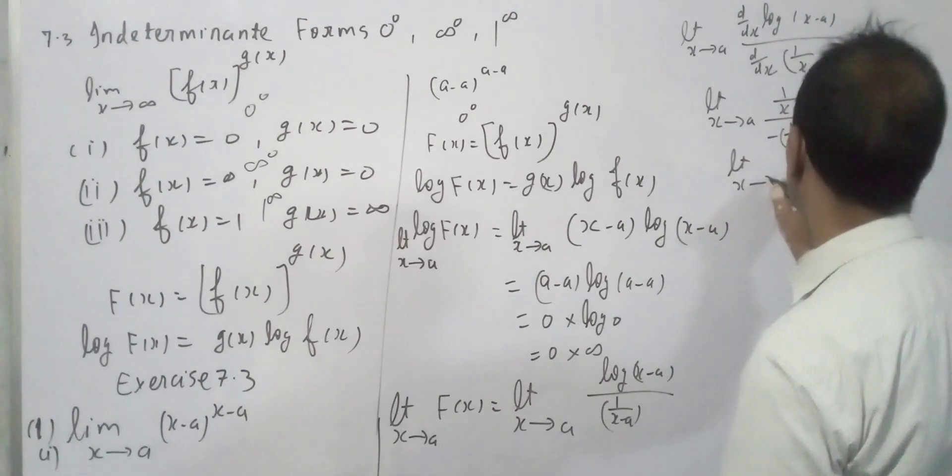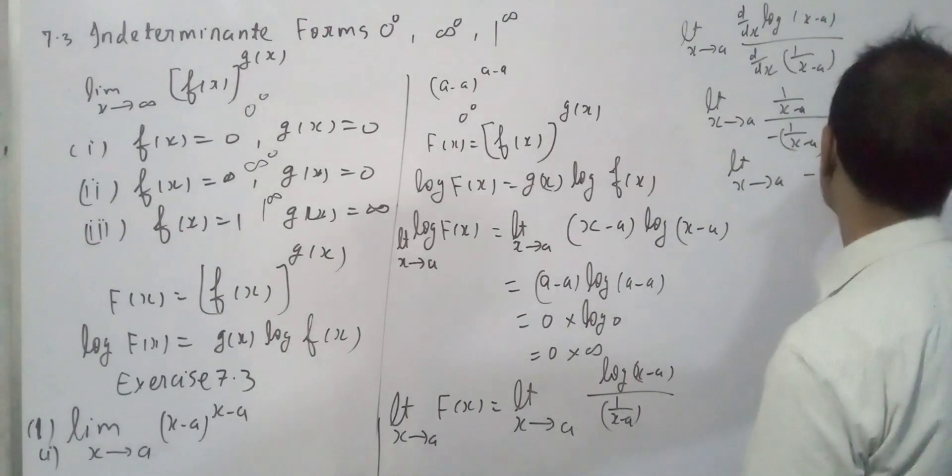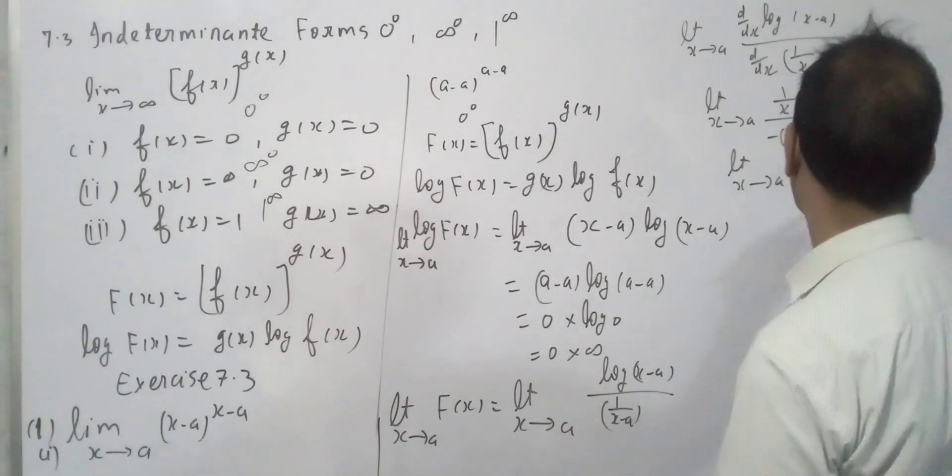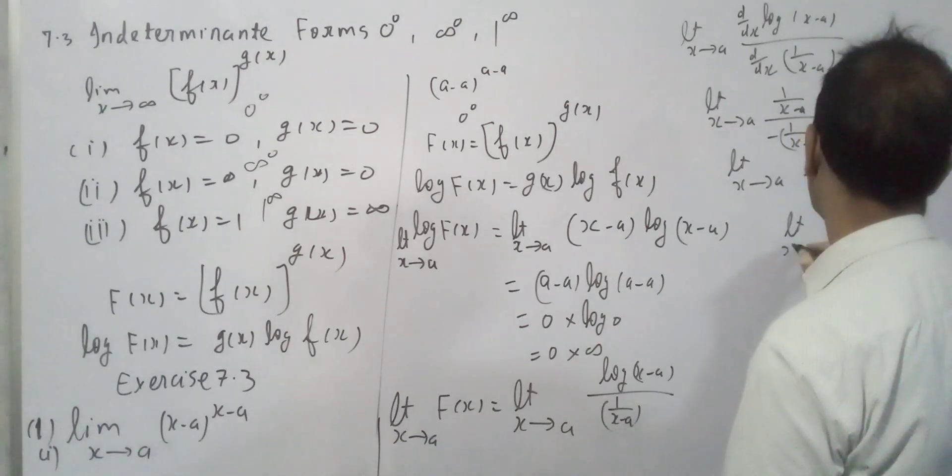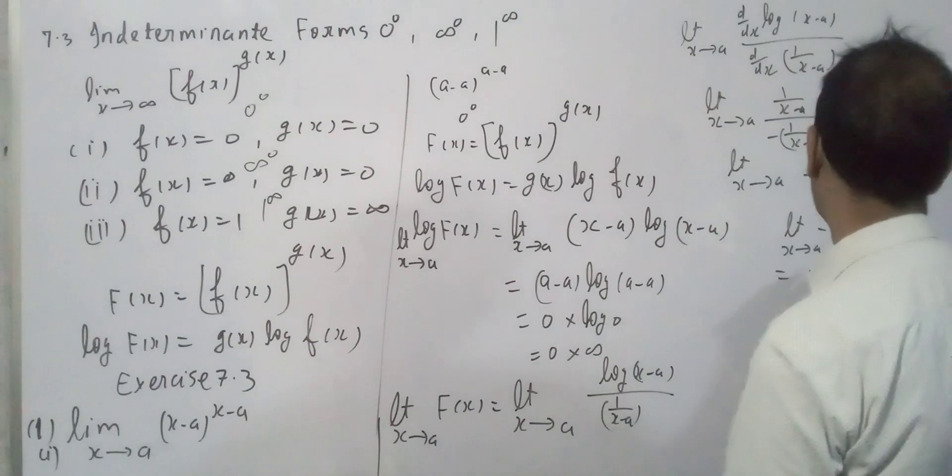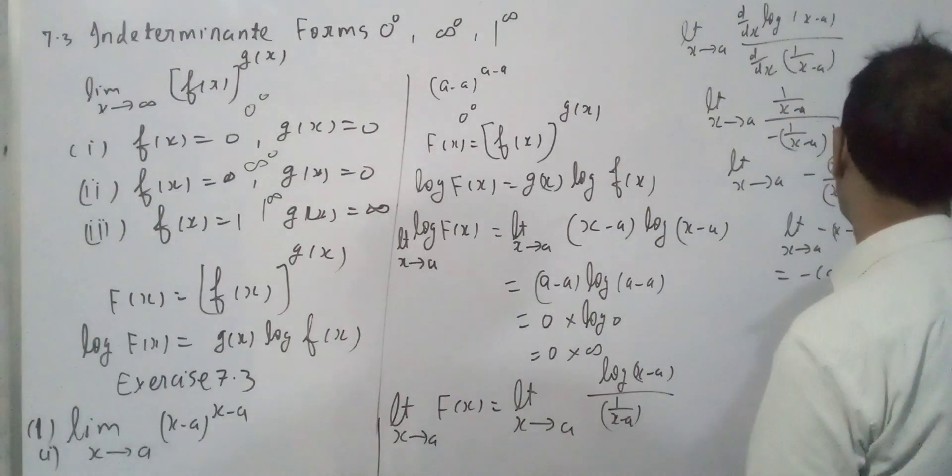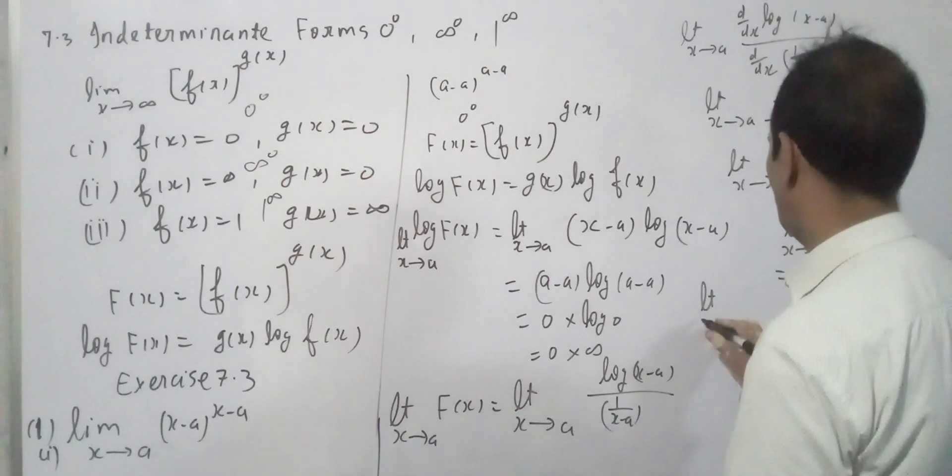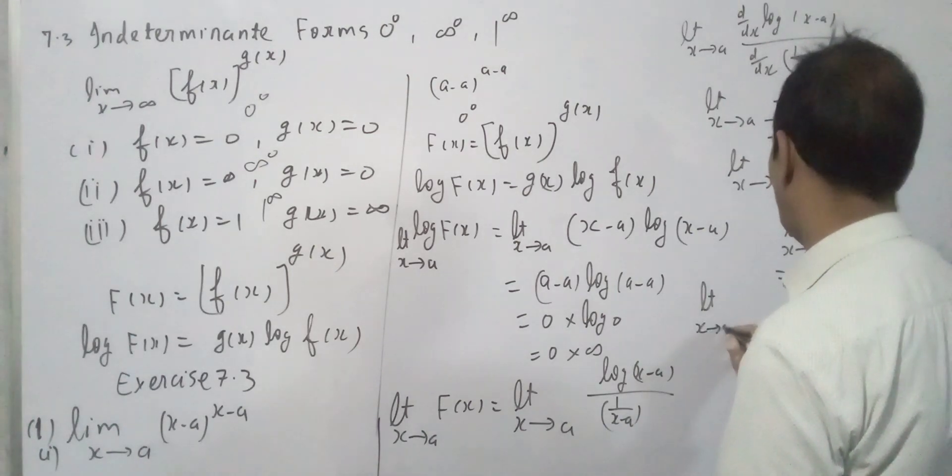So limit x tends to a, -(x-a)² upon (x-a). So limit x tends to a, -(x-a), which equals 0.